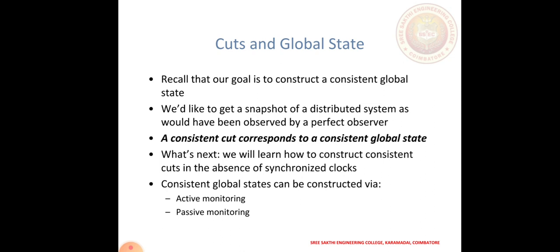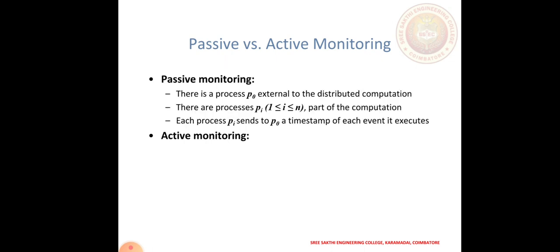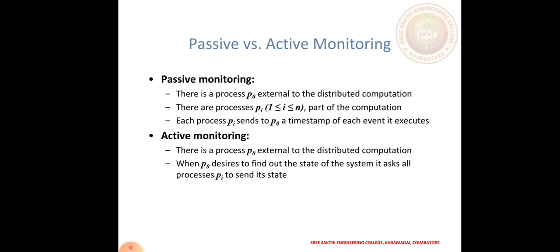The cuts and global state recall that the constraint constructed wants to be maintained. We should like to get the snapshot of the distributed system as should have been observed by perfect observations — a consistent cuts corresponding to the consistent global state. Next, we will learn how to construct a consistent cuts in the absence of synchronization clocks. A consistent global state can be constructed via active monitoring and passive monitoring. There is no process P0 external to the distributed computation; there are processes Pi as part of the computation. Each Pi sends to P0 at the time stuff when an event wants to be executed.